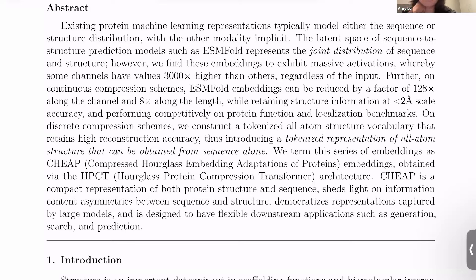One finding is that there are massive activations — some channels have values way higher than others when you take the mean across the channel dimension. We also found that you can compress the embeddings quite a lot and still keep the structure information, and to some extent function information. The philosophical goal is: how do we tame this latent space and make it useful? AlphaFold and ESMFold are called foundation model moments for biology, but in their native form as prediction models, you can't directly use them for generation.